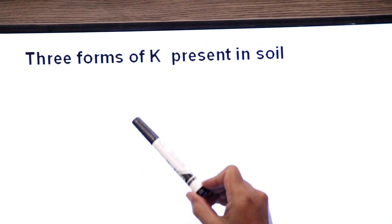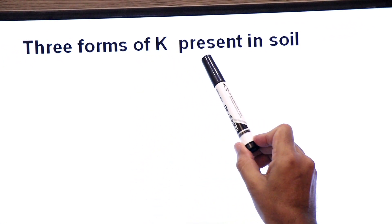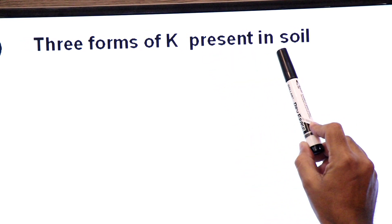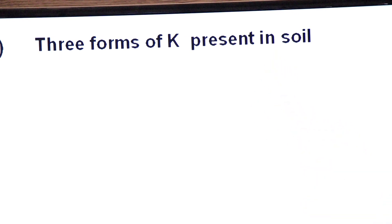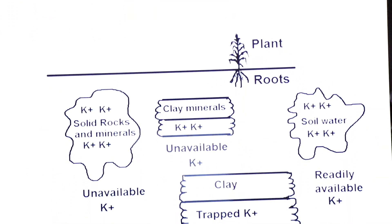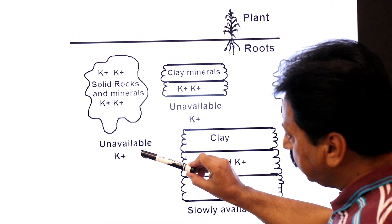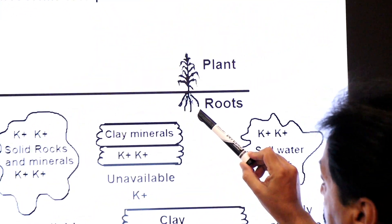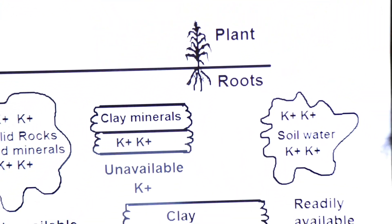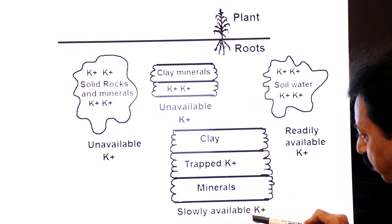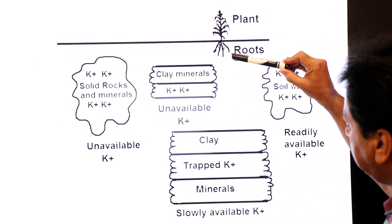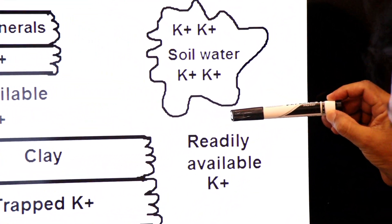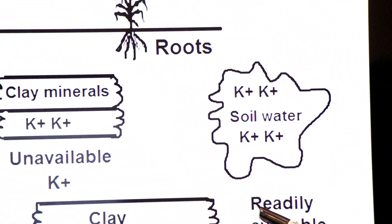First of all, we have to discuss the three forms of potassium present in soil. Soil mein potassium ke teen forms paye jaate hain. Look at the diagram. The three forms are: first, unavailable potassium — which does not reach the plant roots; second, slowly available potassium — which slowly reaches the plant roots; and third, easily available potassium — which radially and easily reaches the roots.